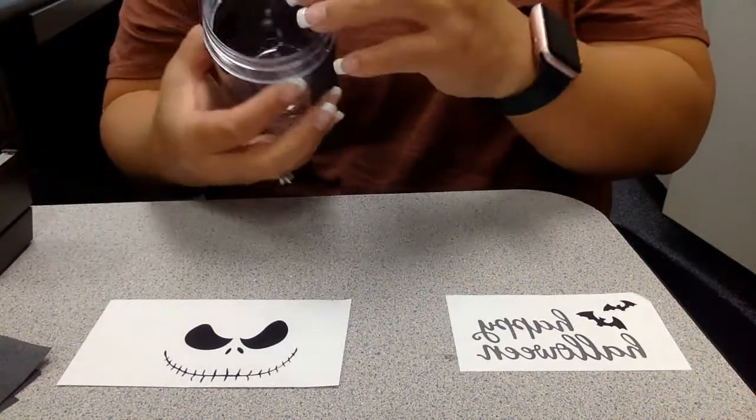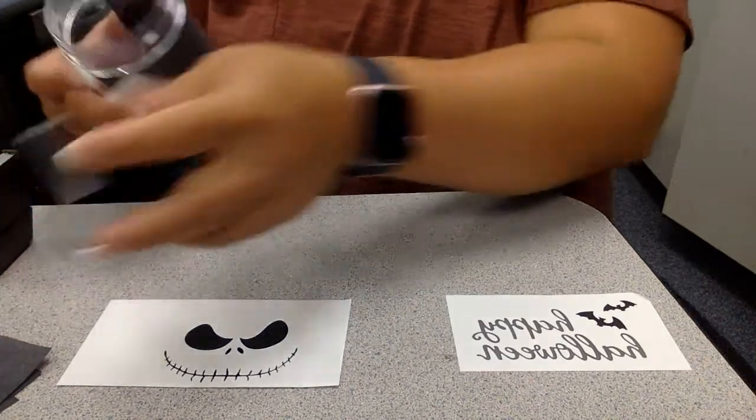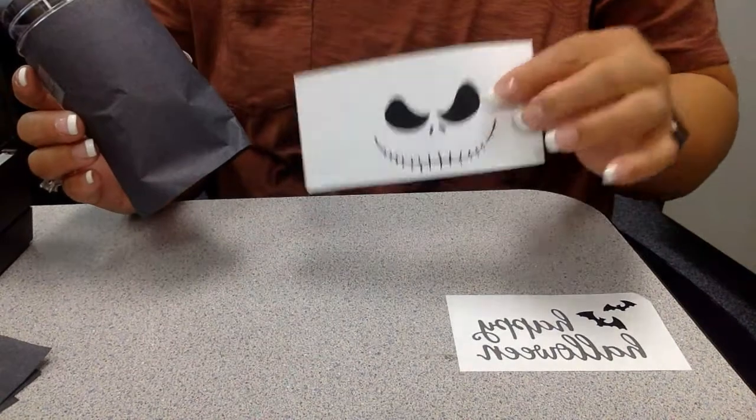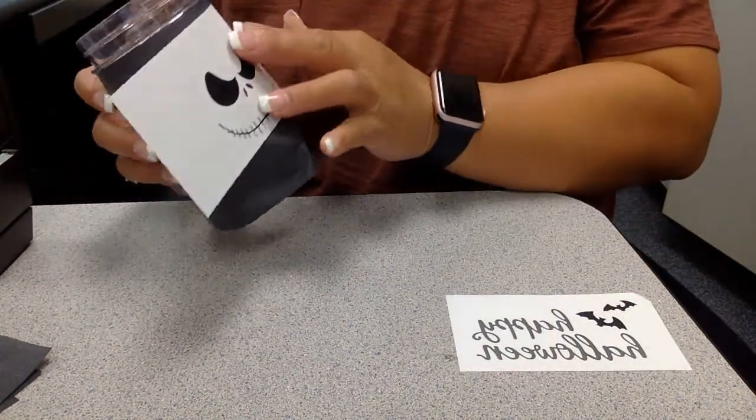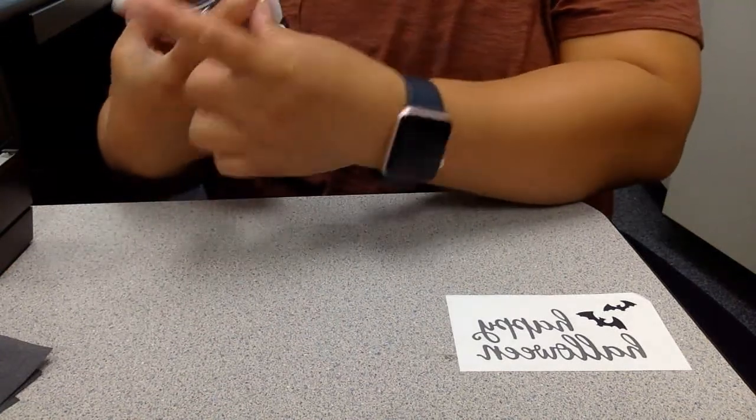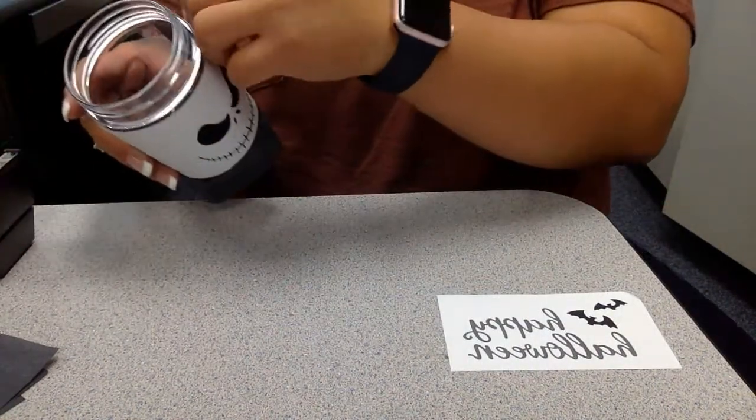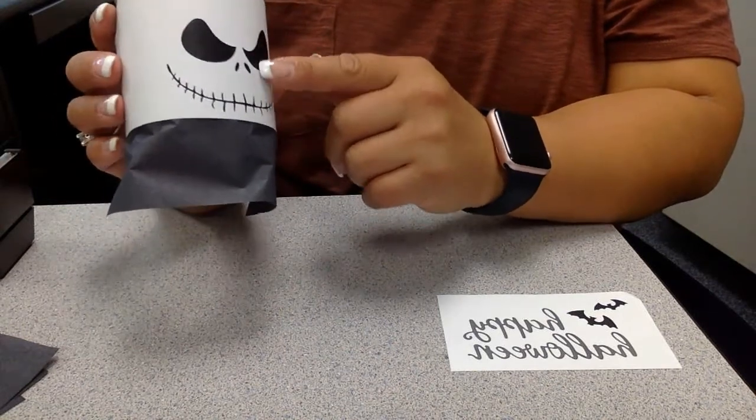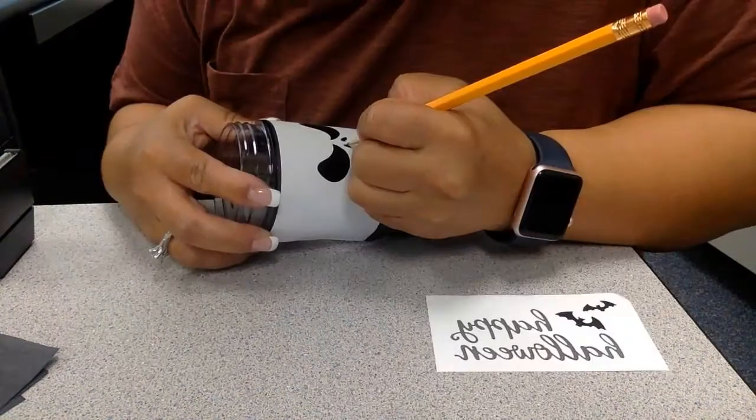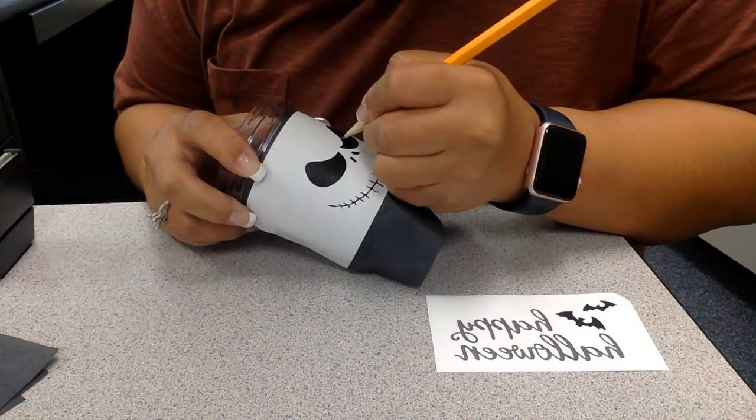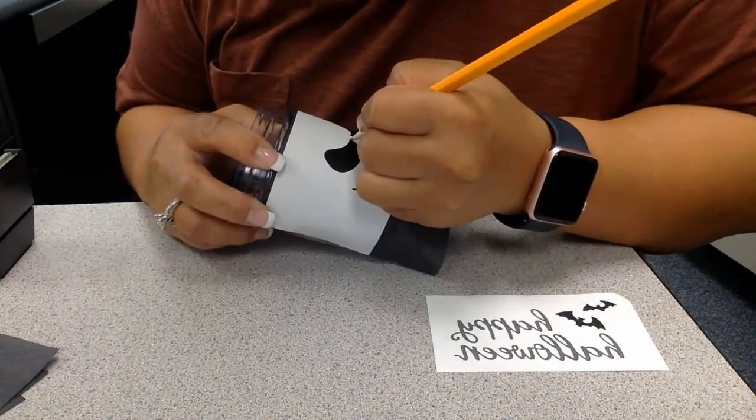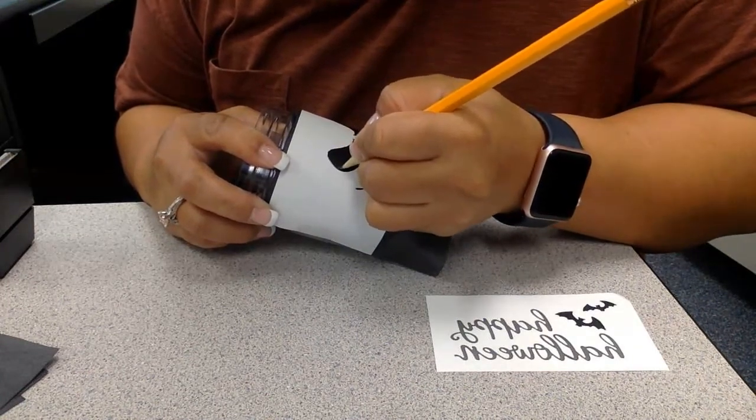Whichever comes out black on your finger is the side that will go on to the jar. Okay, so I'm gonna go ahead and tape that. If you need to cut it, that's up to you. I'm gonna tape it on each side, then I'm gonna take my template and put it right over the carbon paper and tape that too.